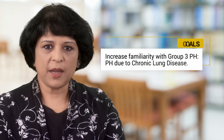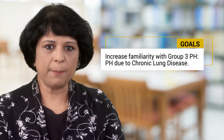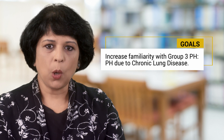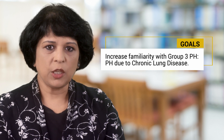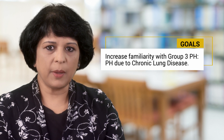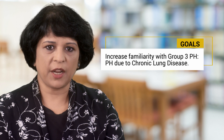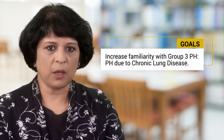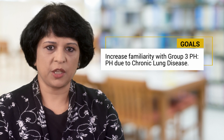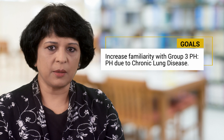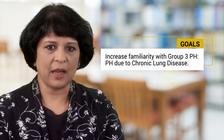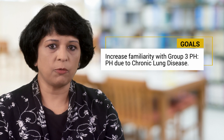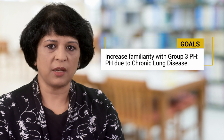I am here to help you understand WHO Group 3 pulmonary hypertension. With this video, I'm hoping you will become familiar with the different groups of pulmonary hypertension, and especially Group 3 pulmonary hypertension that develops in people with severe underlying lung disease or chronic hypoxia, which is a term for low oxygen levels.